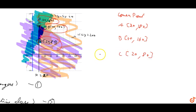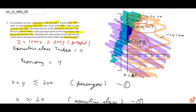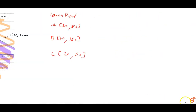Now for maximum profit, the objective function Z equals 1000x plus 600y — that is, 1000 into executive class tickets plus 600 into economy class tickets — gives us the total profit Z equals 1000x plus 600y.